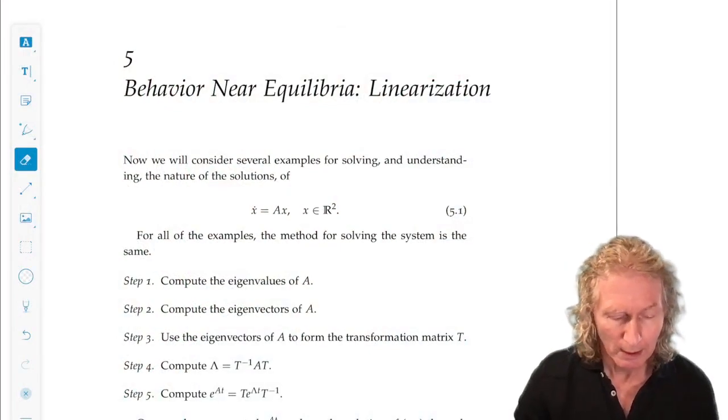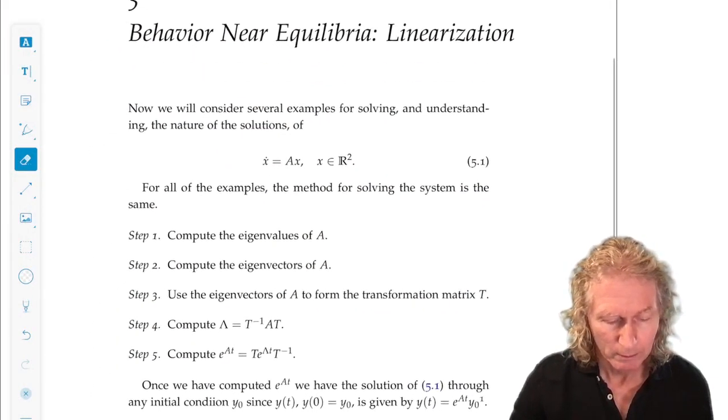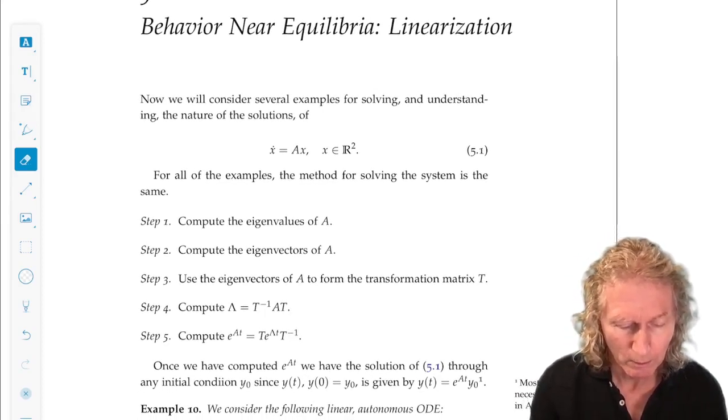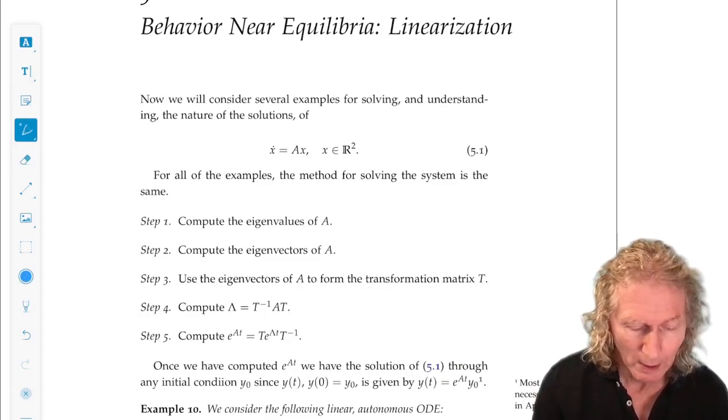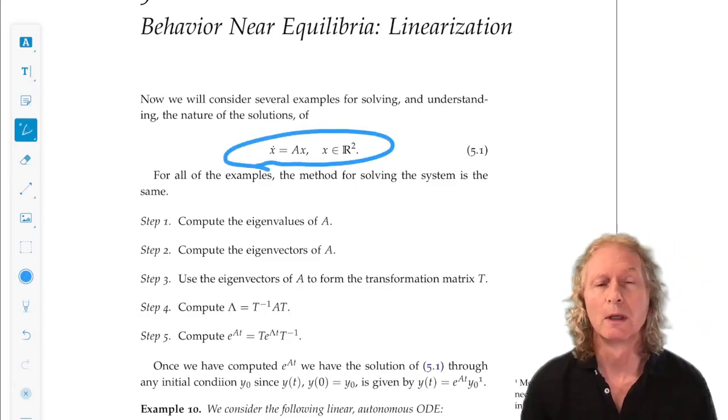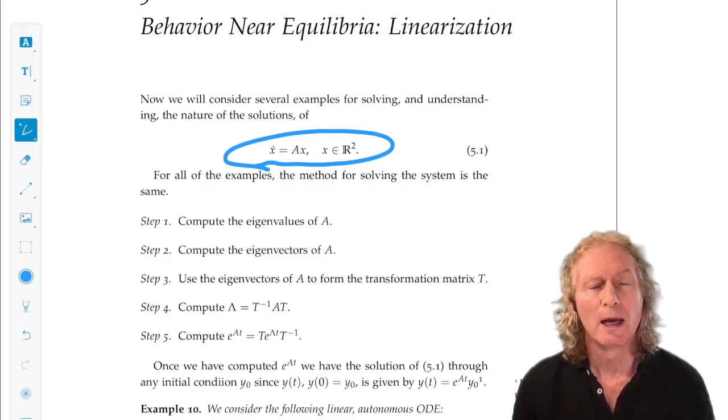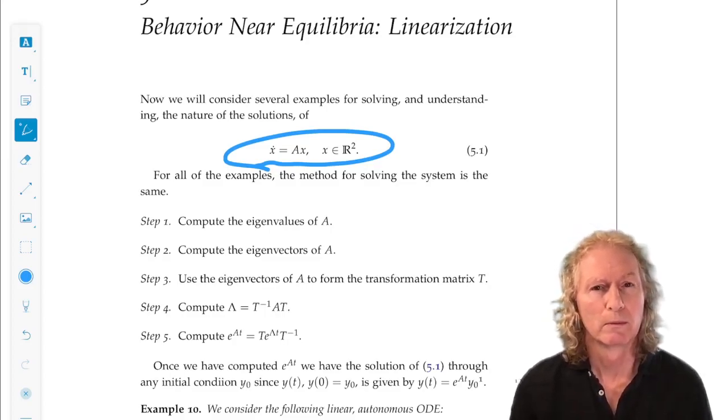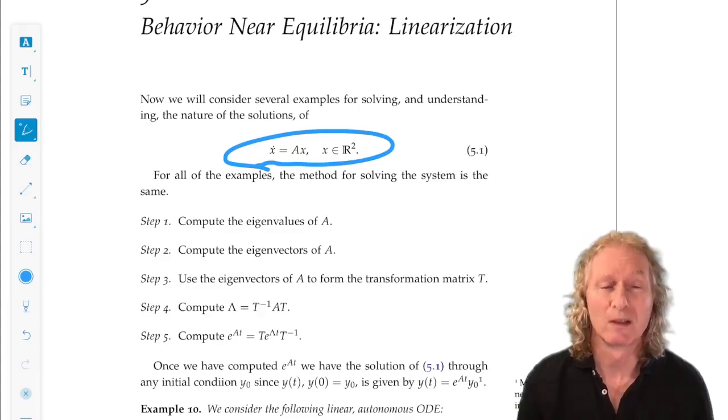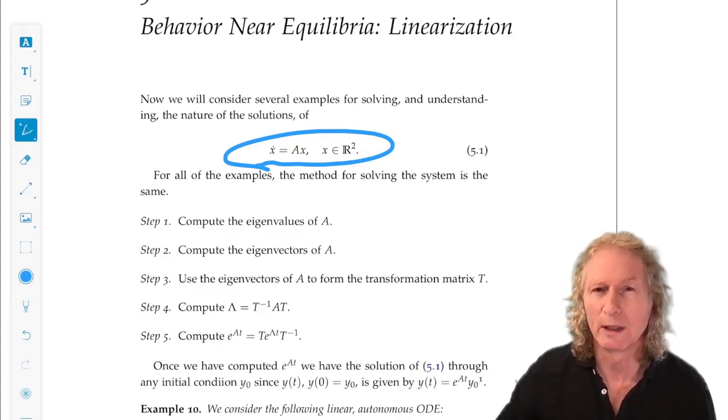So, remember how we ended the last chapter. We talked about solving, in general, this equation, x dot equals Ax. And in this chapter, I'm going to consider x being two-dimensional. And the reason for that is I like to have examples where I can do all the calculations explicitly by hand, without getting bogged down in a lot of algebra, and we can do this.